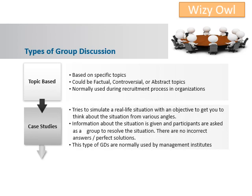The second type of group discussions are case studies. Case studies try to simulate real-life situations and have an objective to get you to think about the situation from various angles. Information about the situation is given and participants are asked as a group to resolve the situation. There are no incorrect answers or perfect solutions in case studies. This type of GD is normally used by management institutes.